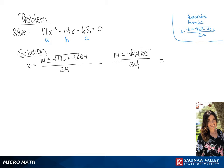We can further simplify this. We can rewrite 4,480 as 64 times 70. We can take the square root of 64, giving us 14 plus or minus 8 times the square root of 70 all over 34.